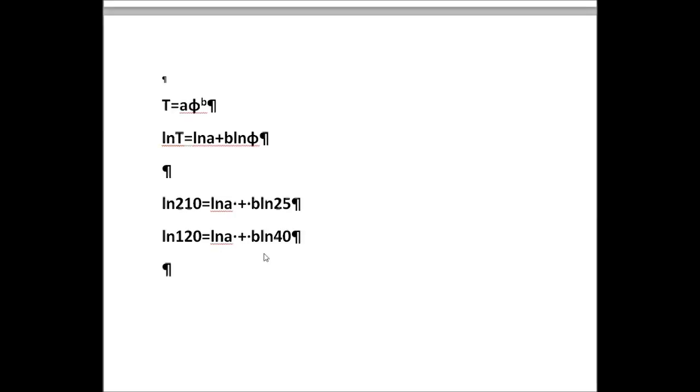Right after that, we're going to simply plug in the two sets of data that was provided to us, and we're going to get these two equations here. ln 210 equals ln A plus B ln 25, and ln 120 equals ln A plus B ln 40. Now, how do we combine these two equations that we made? All we do is take equation one and have equation two subtracted from it. We're going to say two minus one. And that way we are using all the information that was provided to us.